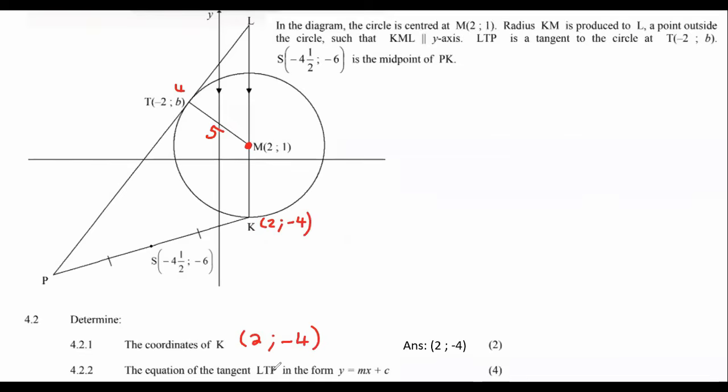So the next one, the equation of the tangent LTP. So that is this line over here. Now to know that equation, we know that a straight line is y equals mx plus c. To find the gradient of a tangent, what we do is we must just realize that these lines here are always perpendicular. That's the key thing that you need to know. So we can say that MT is perpendicular to PL. Why? Because a tangent is always perpendicular to a radius.